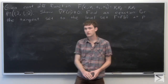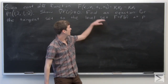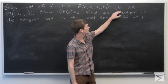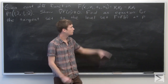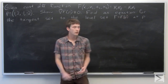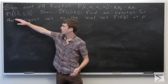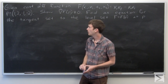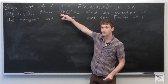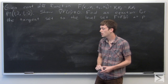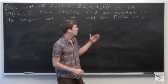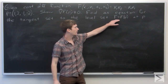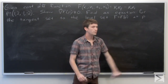In this problem, we're given a continuously differentiable function f of x1, x2, x3, x4, equal to x1 times x4 minus x2 times x3. We're given a point p at (1, 2, -1, -2). We want to show that the gradient vector of f at p doesn't equal zero, and then we want to find an equation for the tangent set to the level set where f equals f of p at the point p.